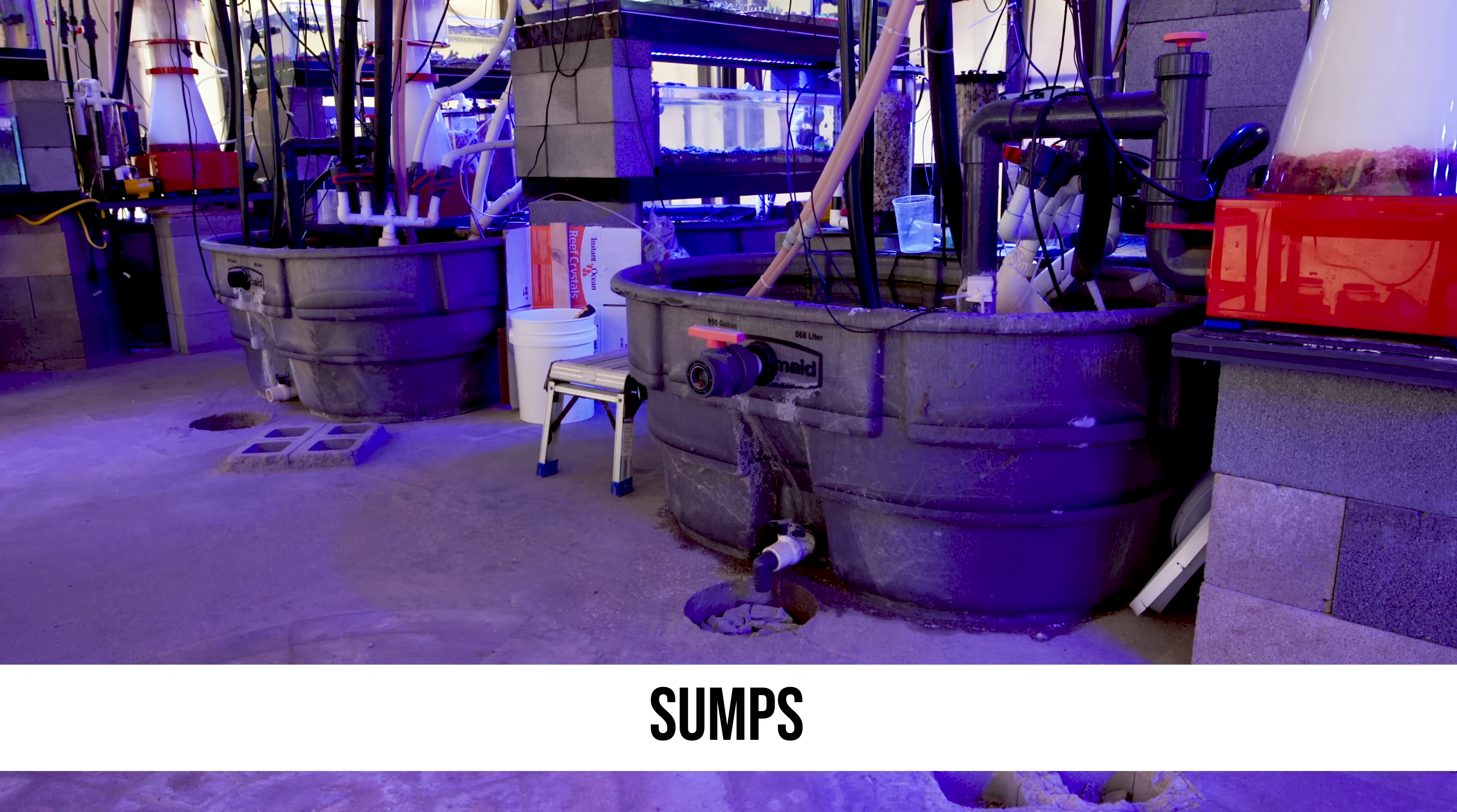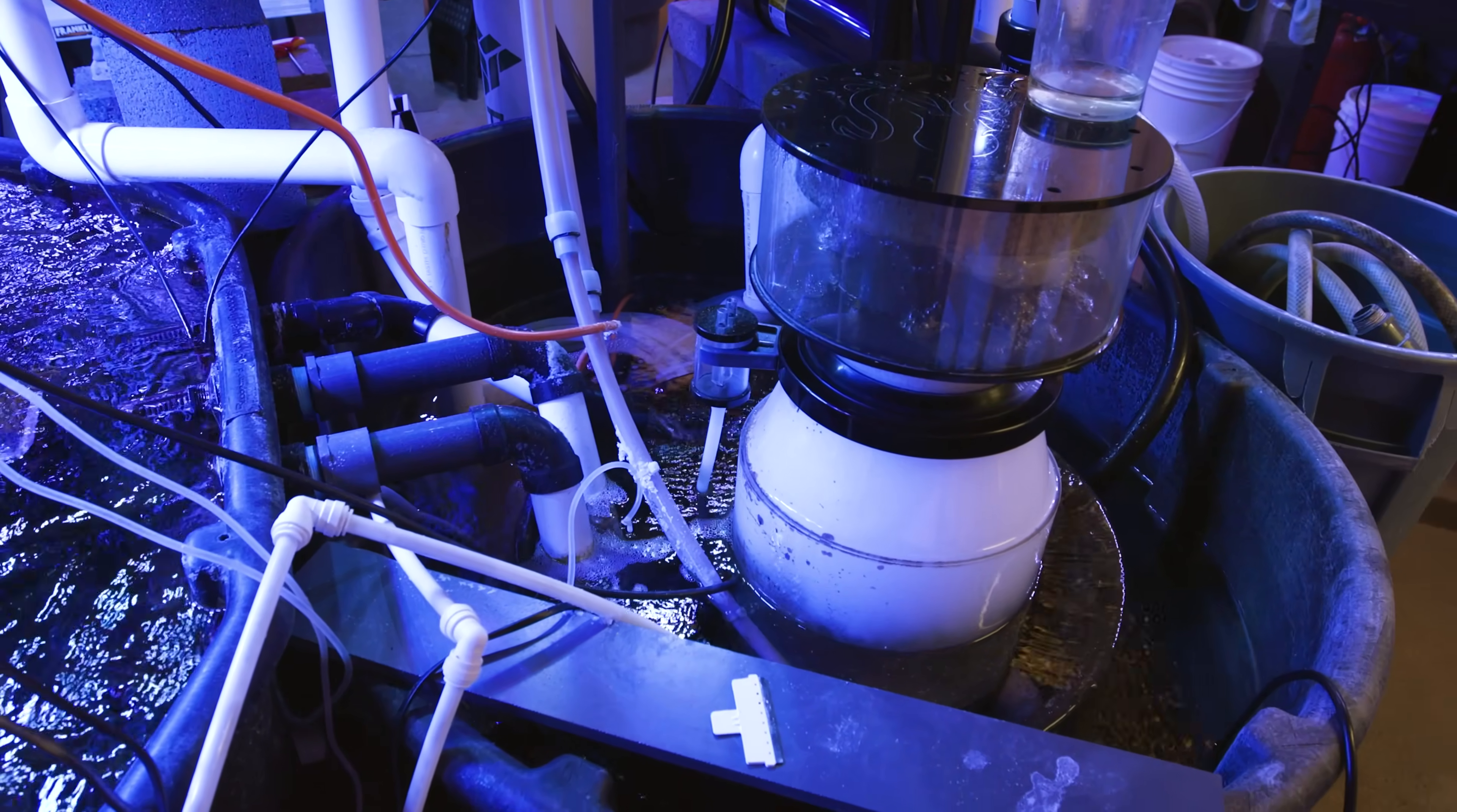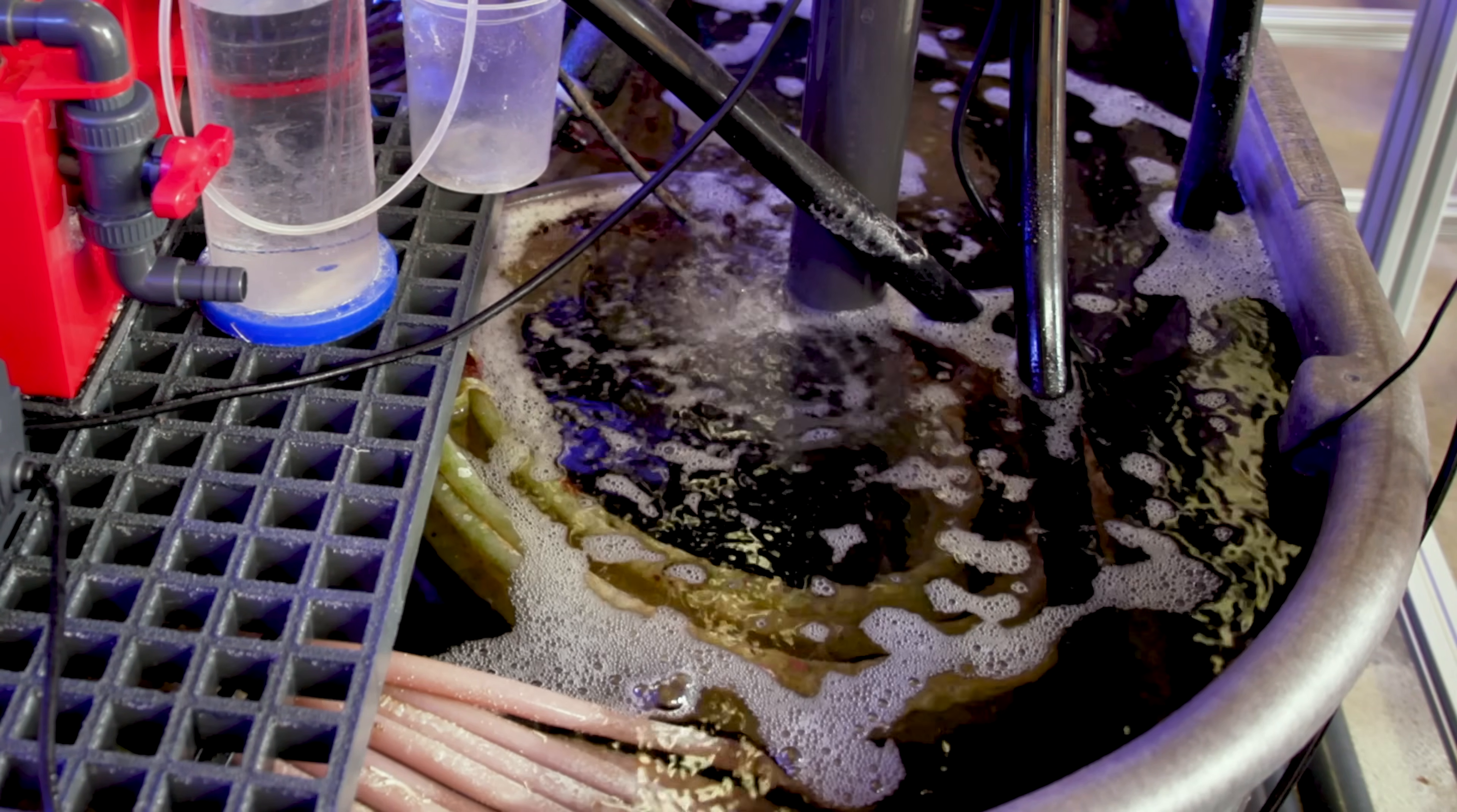We have these 150 gallon sumps and these are also Rubbermaid stock tanks. We greatly underestimated just how much space was needed for all the equipment. If you can believe it, we originally had submersible skimmers in these sumps as well. There are return pumps, there are heating and cooling coils. Long story short, these things became jam-packed, absolutely jam-packed. The absolute worst thing about having a sump that is this jam-packed is when a fish eventually jumps in there and then we have to somehow catch this fish in this labyrinth of stuff. It is so challenging.